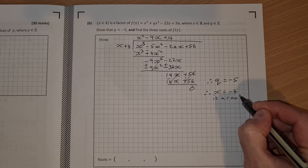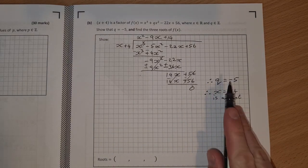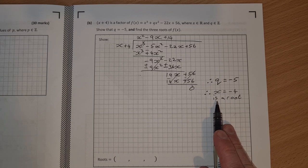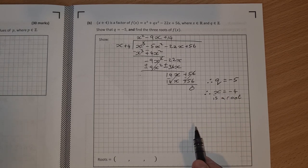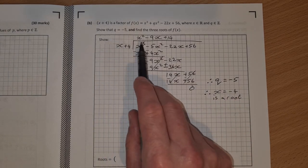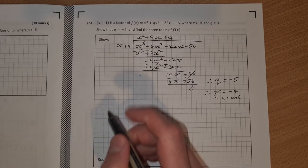So we have shown the first part, q is equal to minus 5. We've also shown that minus 4 is a root. And now I can just factorize this here to get the other two roots.